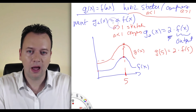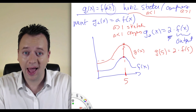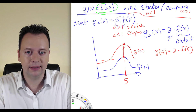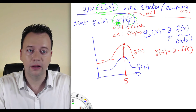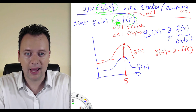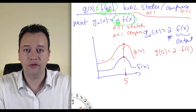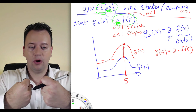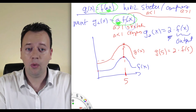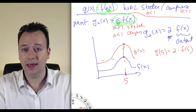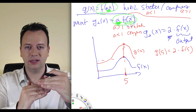If a is less than 1, we're multiplying the output by a number less than 1, like one-half, so it's being compressed down. So depending on whether the multiplier a is inside — acting on x directly — or outside — acting on the output — determines whether it's a horizontal or vertical stretch or compression.